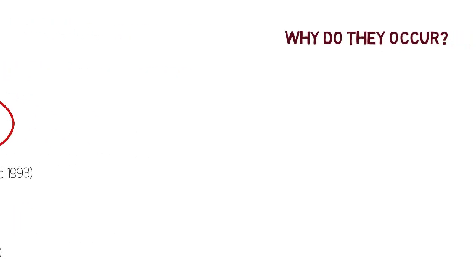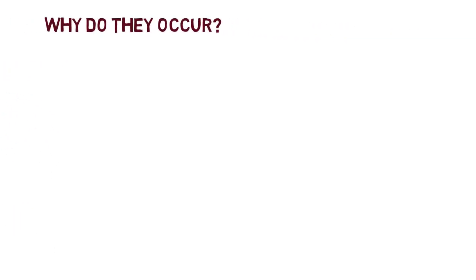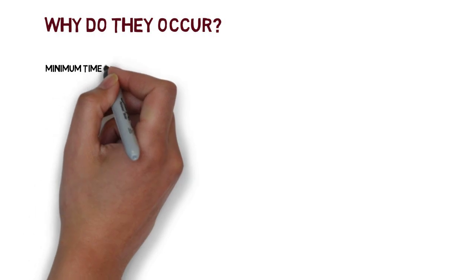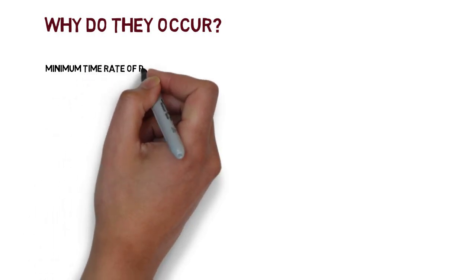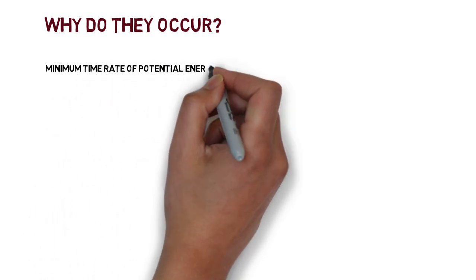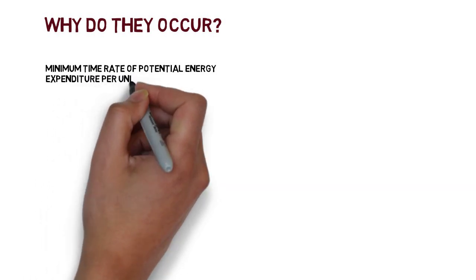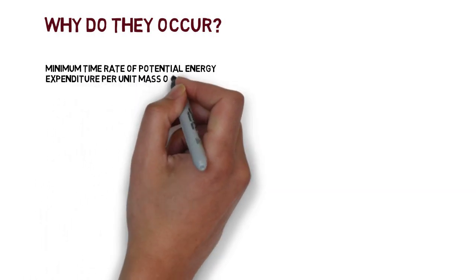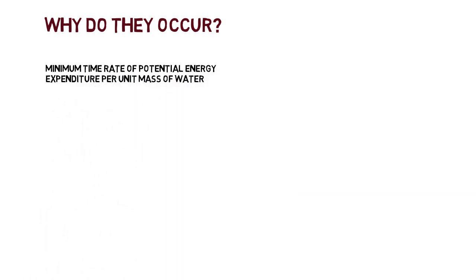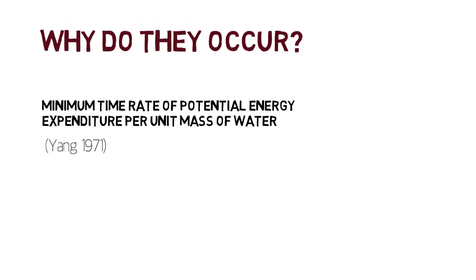But why do they occur? Well, streams tend to adjust themselves to efficiently transport material downstream. They choose their course of flow so that the time rate of potential energy expenditure per unit mass of water along its course is at a minimum. Basically, a stream will move water and sediment along, but it will do so using as little energy as possible and as slowly as possible.